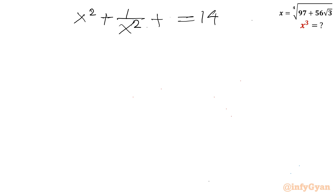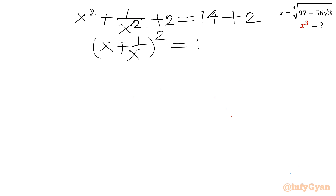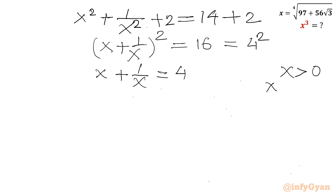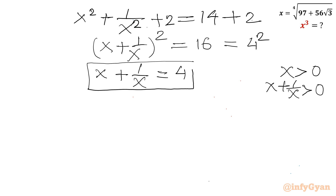Now from x squared plus 1 over x squared equals 14, I will add 2 to both sides again. The left-hand side becomes (x plus 1 over x) whole squared, and the right-hand side is 16, which is 4 squared. So x plus 1 over x equals plus or minus 4. But since x is positive, x plus 1 over x is always positive, so x plus 1 over x equals 4.